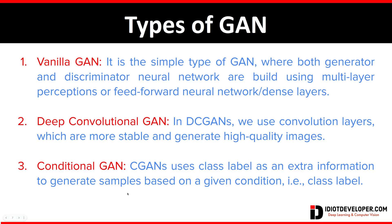The third type is Conditional GAN. In Conditional GAN, we use a class label as extra information to generate samples based on a given condition. We provide both a random noise as the initial input and a class label, and based on the given class label it generates the samples. In Conditional GAN, we have controlled the generation process by giving it extra information — the class label. The first two types of GAN need just images, but the third requires images and their class labels, so Conditional GAN cannot be considered fully unsupervised.